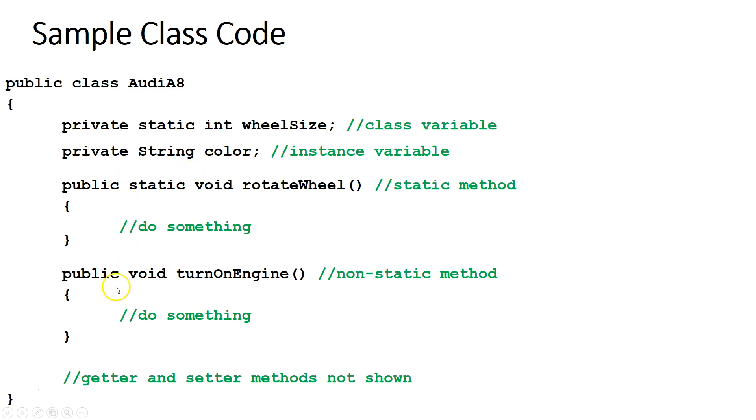Then we have some methods. I didn't actually put the code inside it to save space. Private static void rotate wheel. This is a static method. So we don't have to create an instance to use this. We've got public void turn on engine. This is a non-static method. We can only call this from an instance. And then there's going to be some getter and setter methods that are not shown.